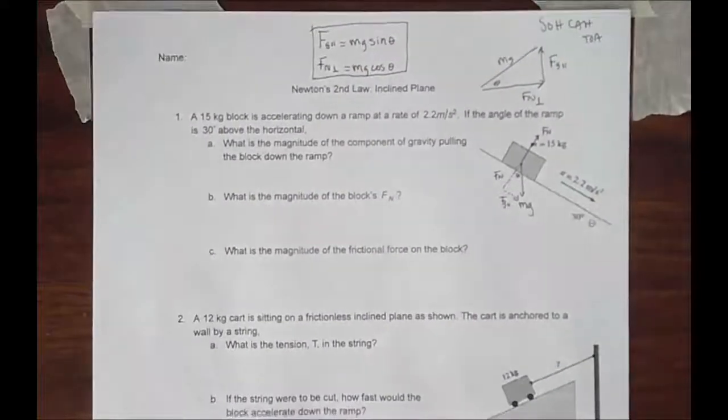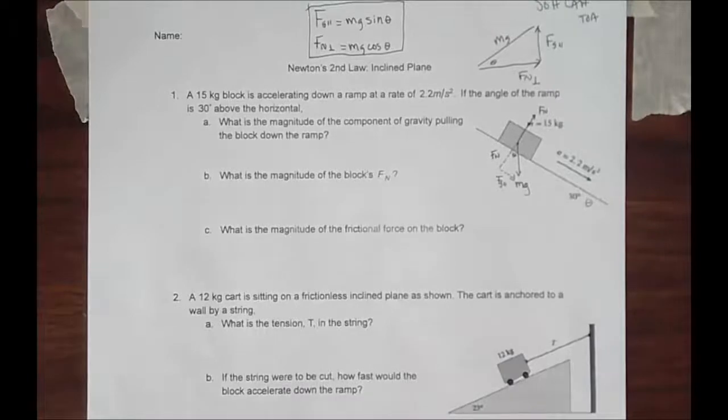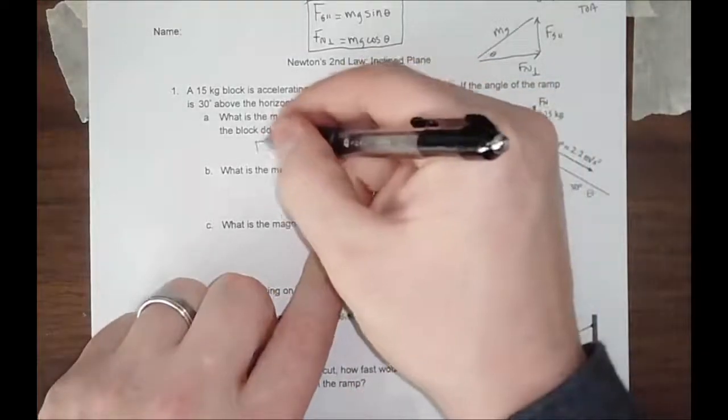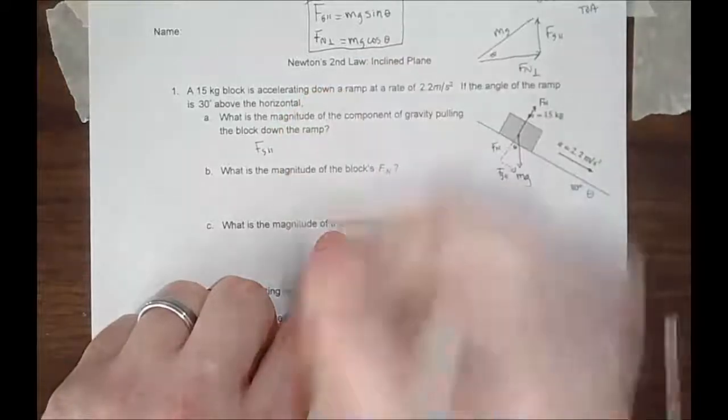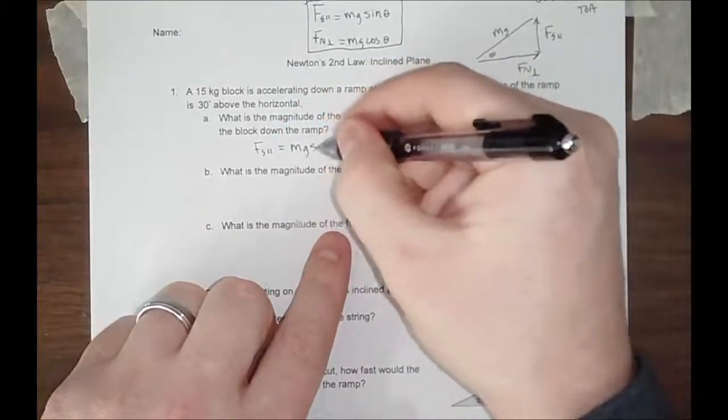Now that we have the basic trig and we've derived that, we can now apply it to the problem. What is the magnitude of the component of gravity pulling the block down the ramp? That component is the force of gravity parallel to the object's motion down the ramp.